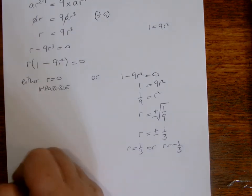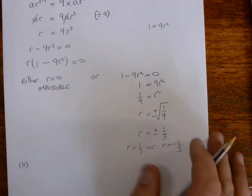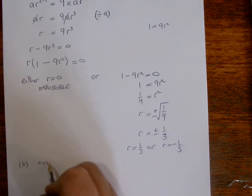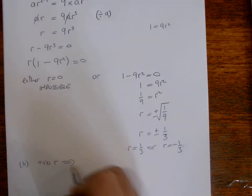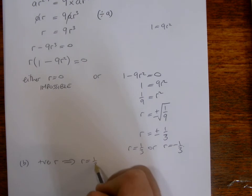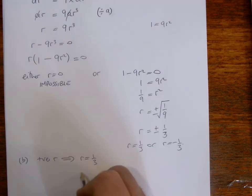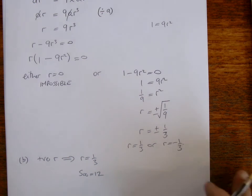So in part B then, it says given that the common ratio is positive. So in other words, positive R, so R is equal to one third. And the sum to infinity of the series is 12. So sum to infinity is 12. Find the third term in the series.